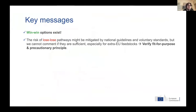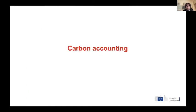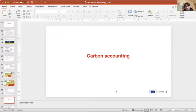The key messages: win-win options exist, which I don't take as a given. The risk of lose-lose pathways may be mitigated by national guidelines and voluntary standards, but we need to verify they are fit for purpose and the precautionary principle should apply. Impacts of scale were not assessed — that was outside the scope. We didn't mean to cover the whole evidence space, and more research is needed.